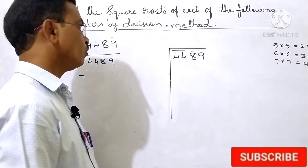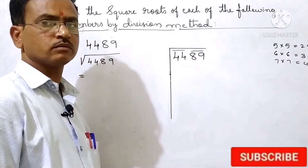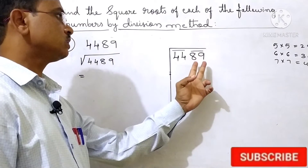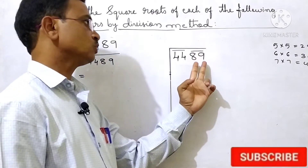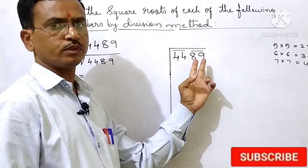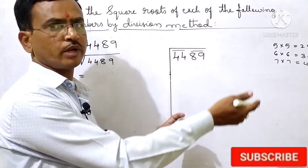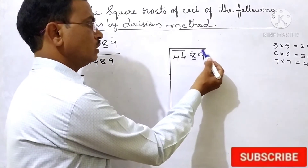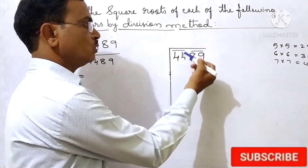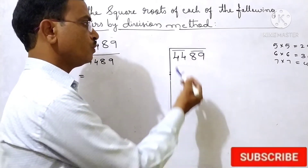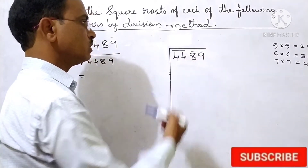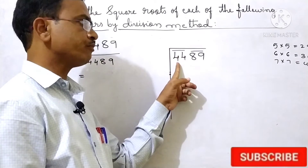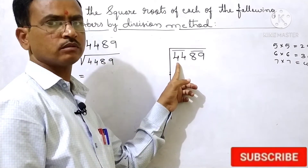Second question: 4489. Two digits should make groups, start from the right hand side. So here the first two digits form one group, then the last two digits form the second group. So in the first group, 44 is there.